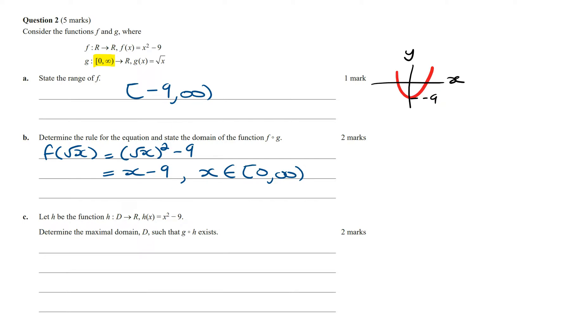Let h be the function h of x equals x squared minus 9. Determine the maximal domain d such that g of h of x exists. For g of h of x to exist, then we want the range of the inner function, which is h of x, to equal or be a subset of the outer function, which is g of x.